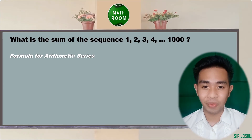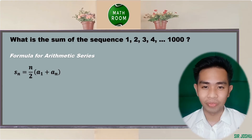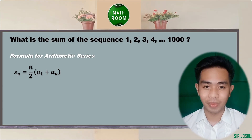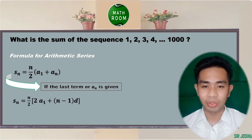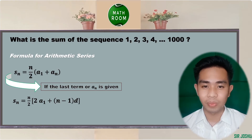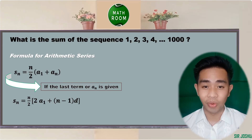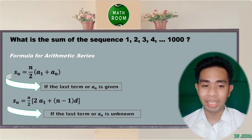The arithmetic series formulas are: S sub N equals N over 2 times quantity a sub 1 plus a sub N — used when the last term a sub N is given. And S sub N equals N over 2 times quantity 2 times a sub 1 plus quantity N minus 1 times D — used when the last term a sub N is unknown.